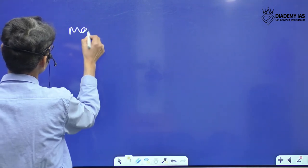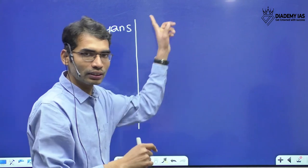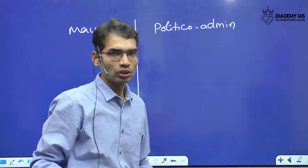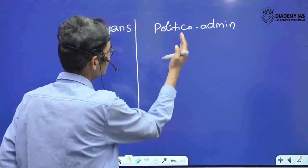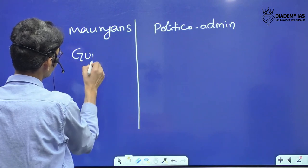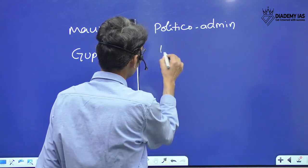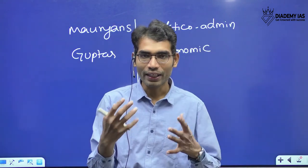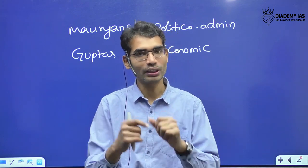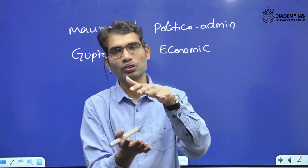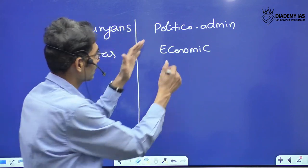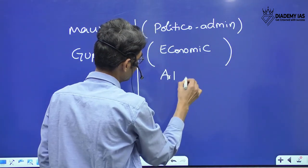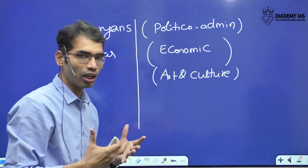If you take Mauryans, themes like political administration — what were the political administrative conditions during the Mauryan time period — and this same theme applies to Guptas as well. We will club all the economic questions under one set when dealing with Mauryans, covering the previous 40 years' questions related to the economic angle, political administration, and art and culture. What is the contribution of Mauryans? What is the contribution of Guptas? Likewise.